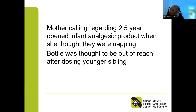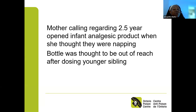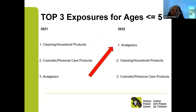One very common call we see regularly is a mother calling regarding her toddler, usually between two and a half to three years old, who has opened an infant concentrated analgesic product while the parent thought they were napping. The bottle was thought to be left out of reach, and was usually available because they had given a dose to another sibling. This scenario is part of why analgesia has moved back up to the number one spot for exposures in children under five.